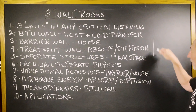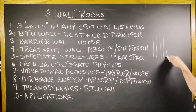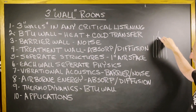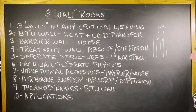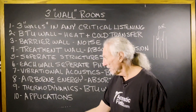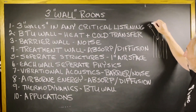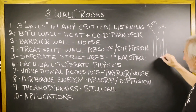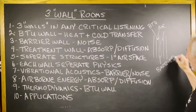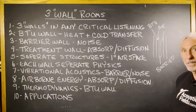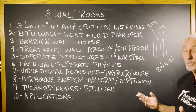All three walls, technically, if we're going to do it right, should be separate structures, and they should all be separated by air space. Now let's look at applications. A lot of times, if this is the BTU wall and this is the barrier, we can combine those — we can put the barrier and the BTU wall together, maybe, depending on noise issues.